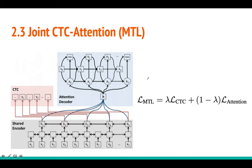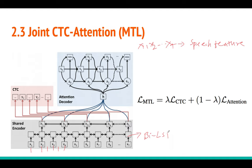Now the actual contribution of this paper: the multi-task learning framework. You have a shared encoder, basically a bi-directional LSTM, that takes a sequence of speech features X1, X2, ..., XT as input. This bi-LSTM — possibly stacked — produces hidden state representations H1, H2, ..., HL. These L-dimensional hidden vectors go as input to two heads: one is the attention decoder head, and the other is the CTC head.